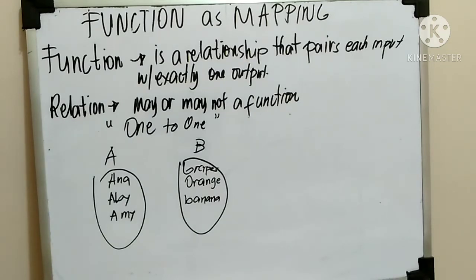Tabi, function is a relationship that pairs each input with exactly one output. So, ito yung natawag natin one to one. So, ito yung classification of correspondence. Si Anna meron siyang grapes, si Abby merong orange, si Amy merong banana. So, ano sa tingin nyo? Is it a function or not a function?